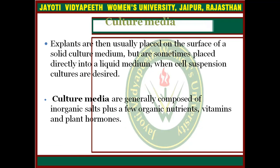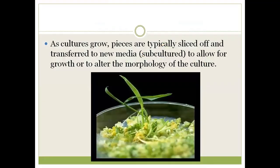Next is the culture media. Explants are then usually placed on the surface of solid culture media, but are sometimes placed directly into liquid media when suspension cultures are designed. Culture media are generally composed of inorganic salts plus a few organic nutrients, vitamins, and plant growth hormones. As the culture grows, pieces are typically sliced off and transferred to new media — this is known as subculture.